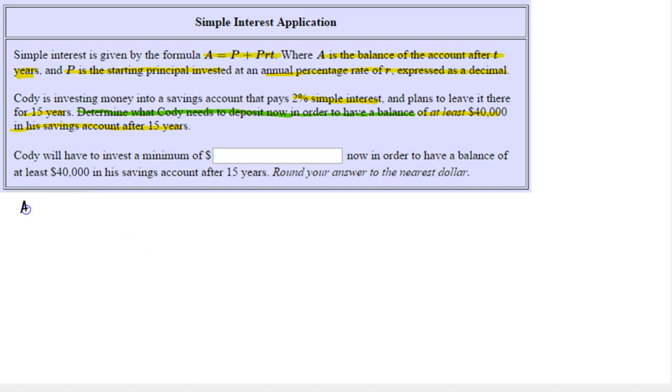So we have A equals P plus PRT. And we're given that A is the balance of the account after T years. So I'm just going to write down everything we're given. And here it says to have a balance of at least $40,000. So I'm going to put $40,000. And then in parentheses, I'm going to write at least. So this is going to be an inequality, not an equation, because it wants at least $40,000.